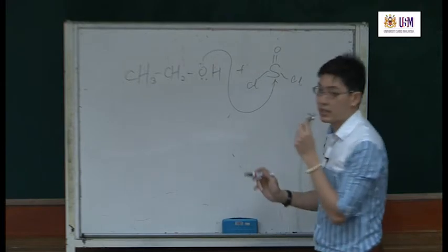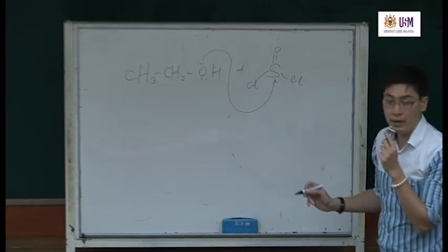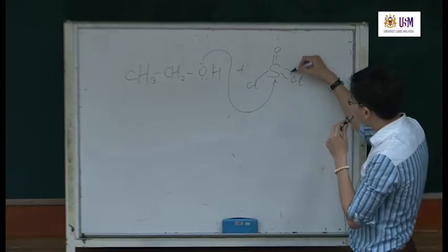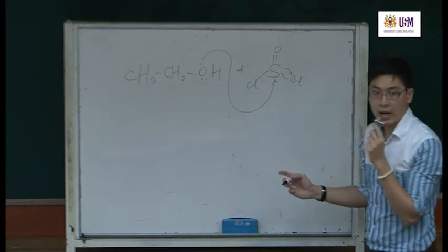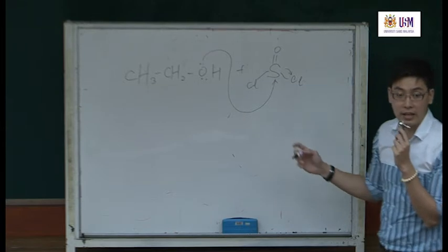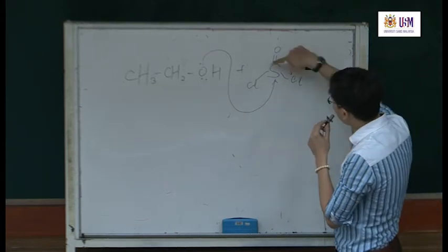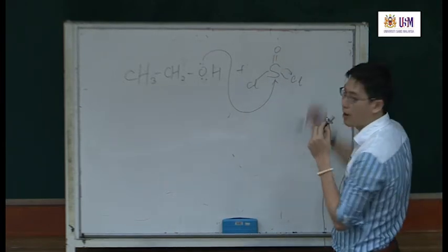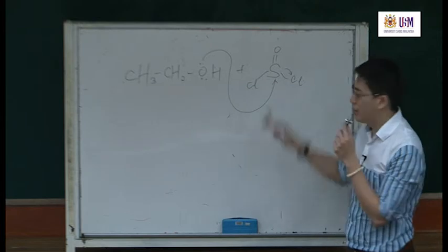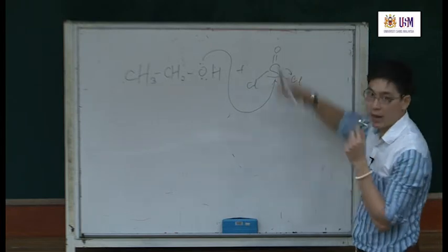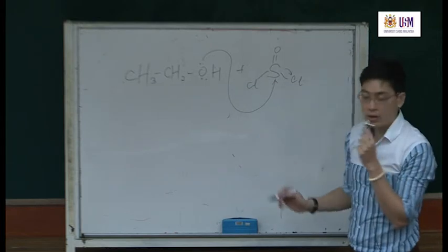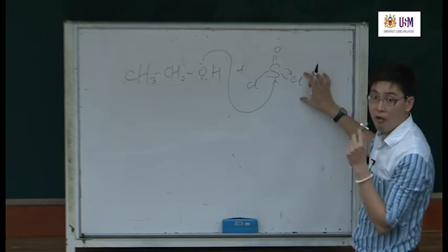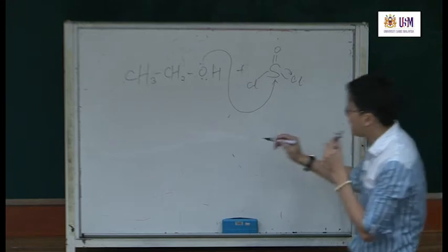After this step, this chloride dropped. In reality, after you attack the S, one Cl goes up, one goes down, and this comes down. But we just don't show every step. After that, you get a chloride atom.